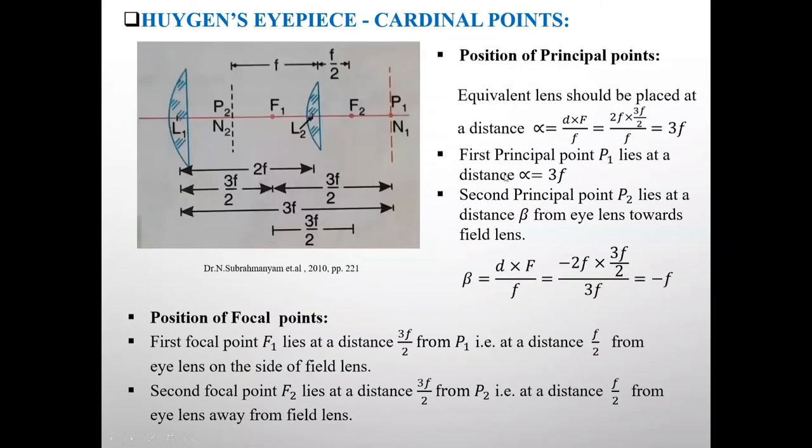So students, see this is diagram of Huygen's eyepiece and we have to discuss cardinal points of this Huygen's eyepiece. So first we will see position of principal points.